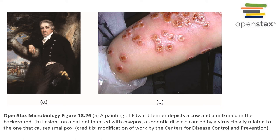Later, Louis Pasteur worked to develop several more vaccines for rabies, cholera, and anthrax. Following that, several others developed vaccines for a wide variety of infectious diseases including chickenpox, hepatitis, measles, mumps, polio, yellow fever, diphtheria, bacterial pneumonia, tetanus, whooping cough, and HPV — the human papillomavirus that causes cervical cancer and other forms of cancer.